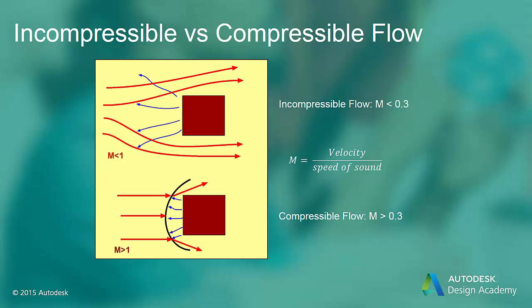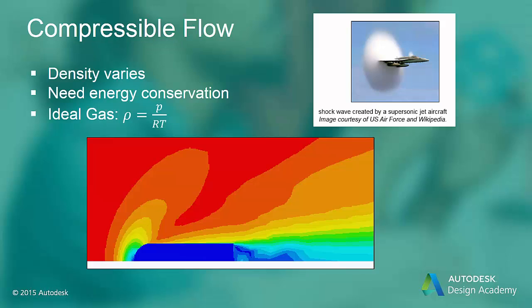Many other phenomena, such as buoyancy-driven flow, as in the case of natural convection, can also not be solved using the incompressible flow assumption, because density variations can be the driving force for fluid motion. If the Mach number, which is the ratio of the flow velocity to the local speed of sound, exceeds 0.3, or if the fluid undergoes very large pressure changes, then compressibility of fluids cannot be ignored.